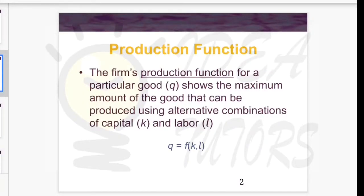In this video we will cover production function. A firm's production function for a particular good it produces shows the maximum amount of the good that can be produced using alternative combinations of inputs. Basically, the production function shows that given the inputs, the maximum output of a particular good that can be achieved.